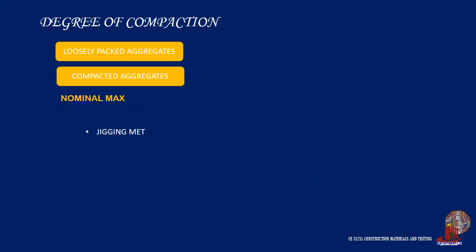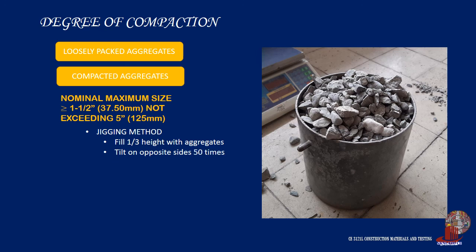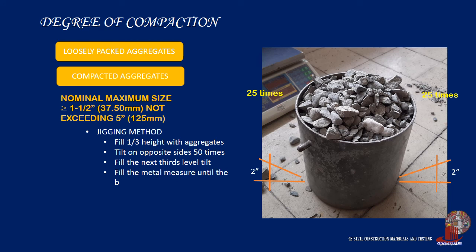The jigging procedure is applied for aggregates having a nominal maximum size greater than 1.5 inches or 37.5 mm and not exceeding 5 inches or 125 mm. It is for the reason that rodding bigger particles will be of little advantage for compaction. With a similar layered procedure, the metal measure is shaken by lifting both sides at least 2 inches, 25 times each, for a total of 50 jigs.